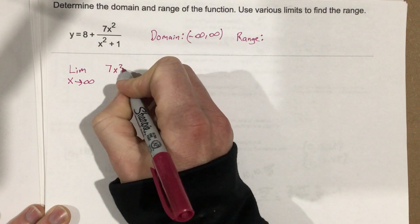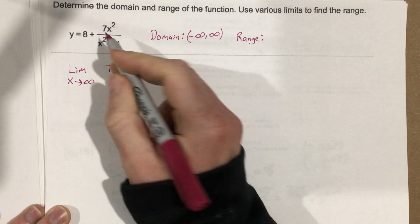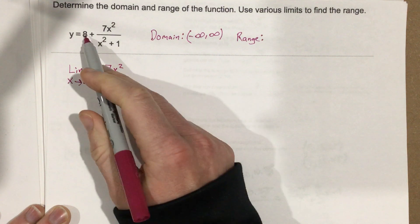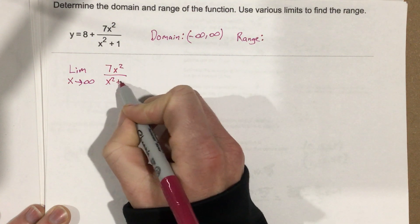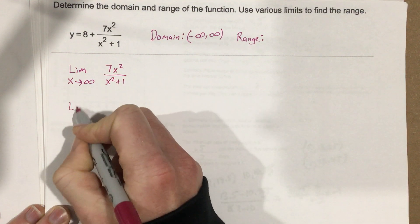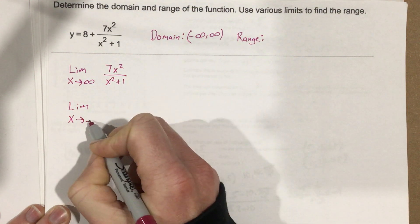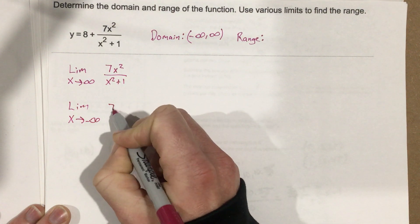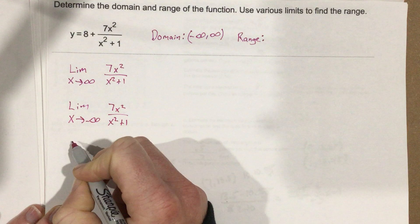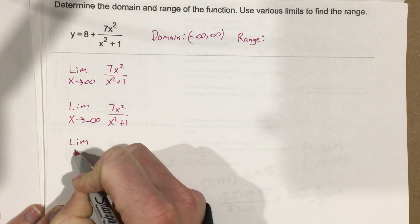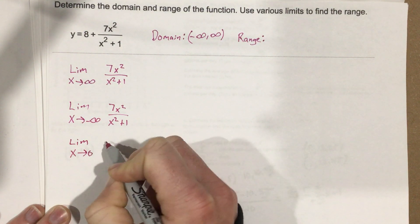I know that's 8. So 7x squared over x squared plus 1, that's one thing I'm going to look at. Then I'm going to do the limit as x approaches negative infinity for that function. And then I'm also going to do the limit as x approaches 0 for this function.